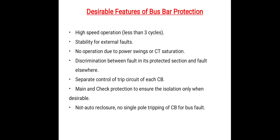What are the desirable features of a bus bar protection scheme or bus bar protective device? The most important feature is high speed operation — the protective device must be capable of operating in less than 3 cycles. Stability for external faults means whenever the fault occurs outside the protective zone, our system must remain stable. No operation due to power swings or current transformer saturation — when the iron core of a CT is saturated at high current, the protective scheme must not operate at that particular instant.